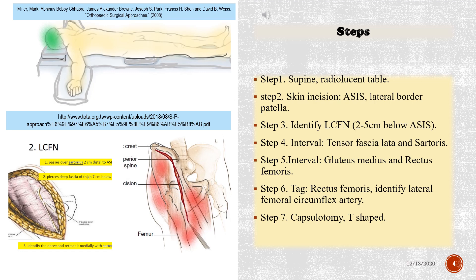Step 1: supine on a radiolucent table. Step 2: skin incision from the ASIS to the lateral border of the patella.